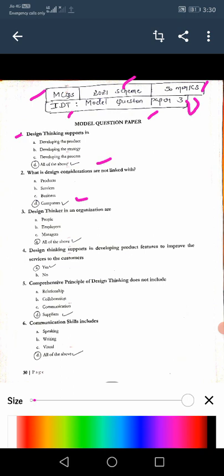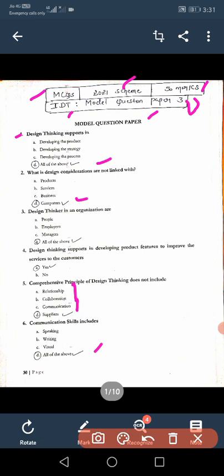Third one: Design thinker in an organization are people, employee, managers, all the above. So it is all the above. Fourth one: Design thinking supports in developing product features to improve the service to the customers, yes. Fifth one: Comprehensive principle of design thinking does not include relationship, collaboration, communication, suppliers. It will include all these, suppliers it will not include, hence the correct answer is suppliers.